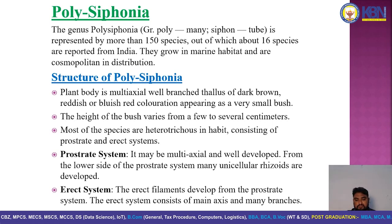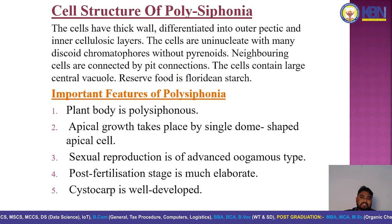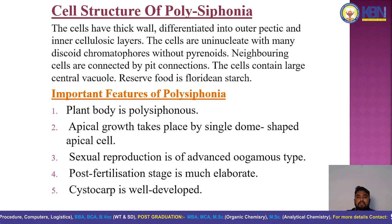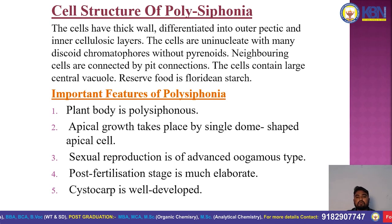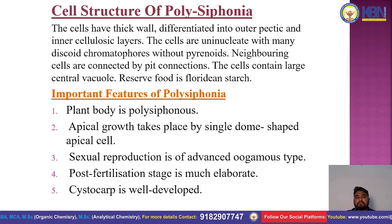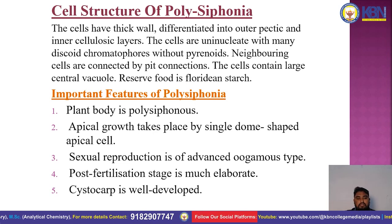The cell structure of Polysiphonia: cells have a thick wall differentiated into an outer pectic layer and an inner cellulose layer. The cells are uninucleate with many discoid chromatophores without pyrenoids. Neighboring cells are connected by pit connections. The cells contain a large central vacuole, and the reserve food is floridean starch.